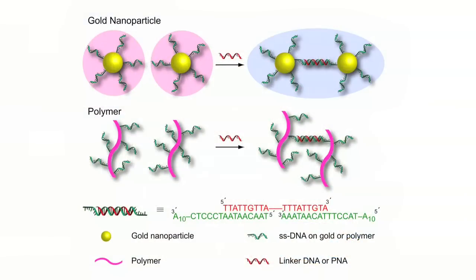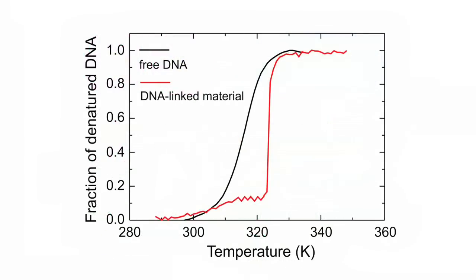The properties of these materials have been of great interest in theoretical modeling. When the first DNA-linked gold nanoparticle aggregates were synthesized by Mirkin and co-workers in the mid-1990s, it was quickly discovered that the thermal melting transitions in these materials are much sharper than in the corresponding transitions for the same DNAs in solution. A number of theoretical models have been proposed to explain this thermal melting behavior.